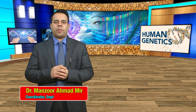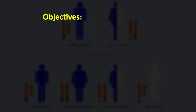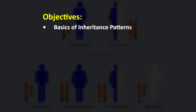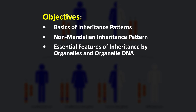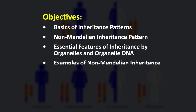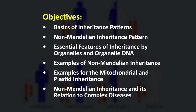Hello and welcome dear students. Today we are going to discuss the topic non-Mendelian inheritance and complex diseases. The main objectives of today's lecture are to know the basics of inheritance patterns, to understand the non-Mendelian inheritance pattern, to understand the essential features of inheritance by organelles and organelle DNA, to explain the examples of non-Mendelian inheritance, to explain the examples for mitochondrial and plastid inheritance, and to discuss the non-Mendelian inheritance and its relation to complex diseases.